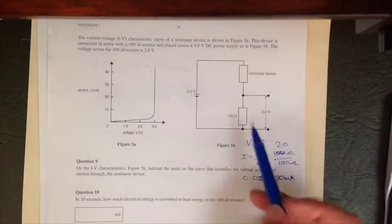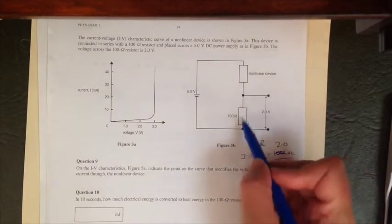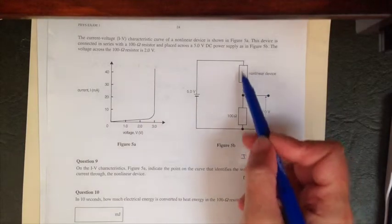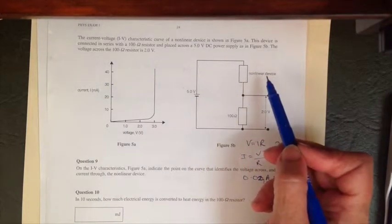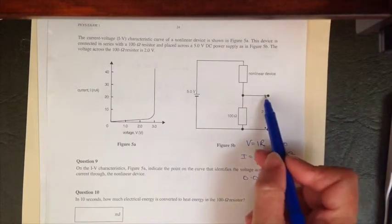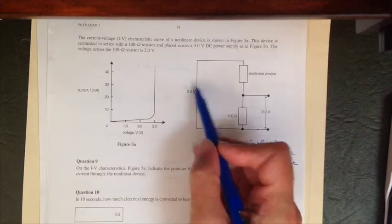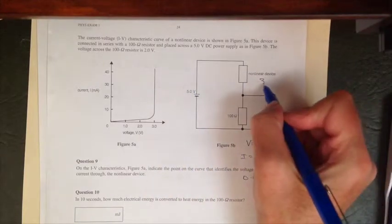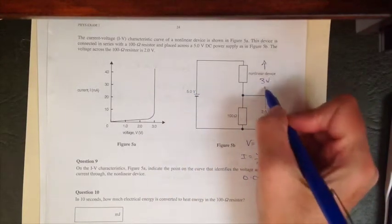So we now know that we have 20 milliamps traveling through this part of the resistor, which means we must have 20 milliamps traveling through here. The other piece of information that we can use is the fact that if this is 2 volts across here and we have 5 volts in total, then that must be 3 volts across there.